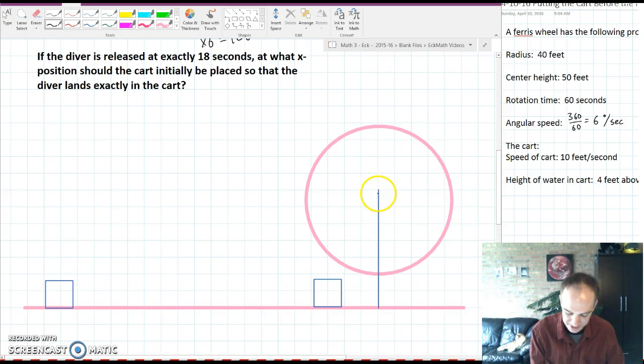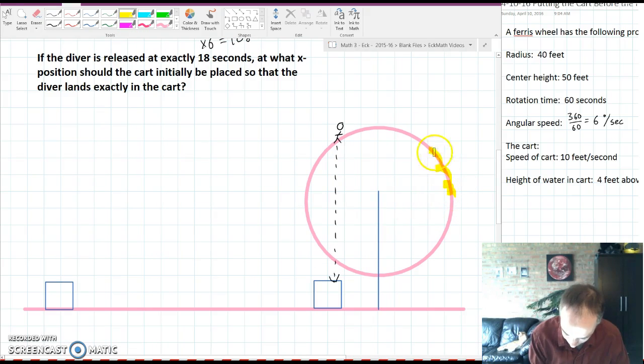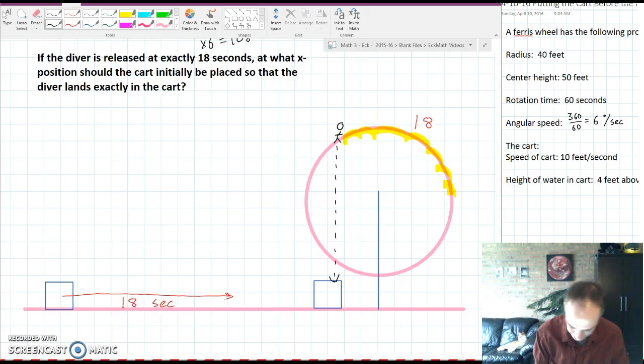So 108 degrees is in the second quadrant somewhere around here. So we'll say that the diver is on the Ferris wheel and they're going to fall from here into the cart. The diver is on the wheel for exactly 18 seconds. That means that the cart also is going to move for exactly 18 seconds. Then when the diver starts to fall the cart continues to move for a little bit more time until hopefully everyone lands together in the same spot.